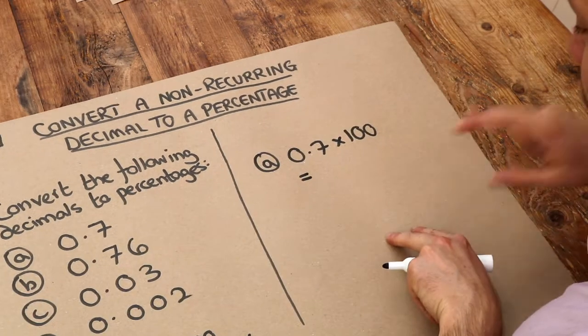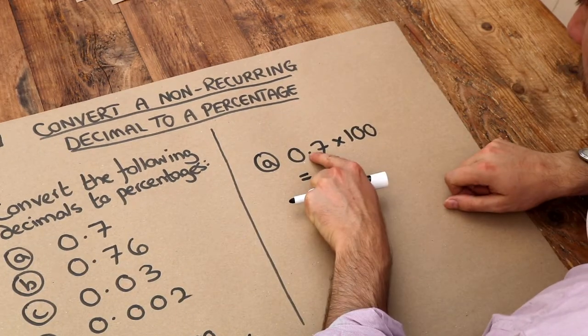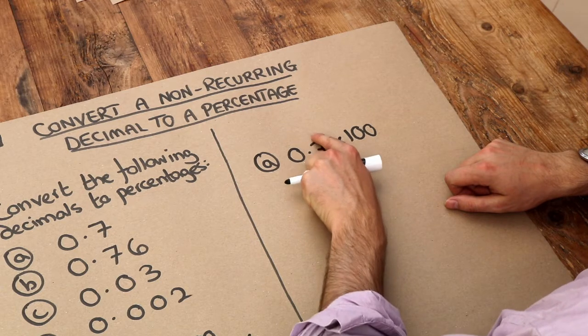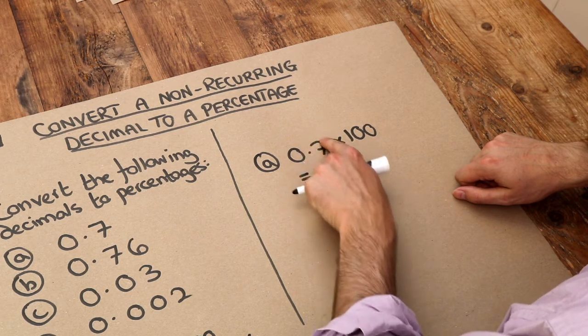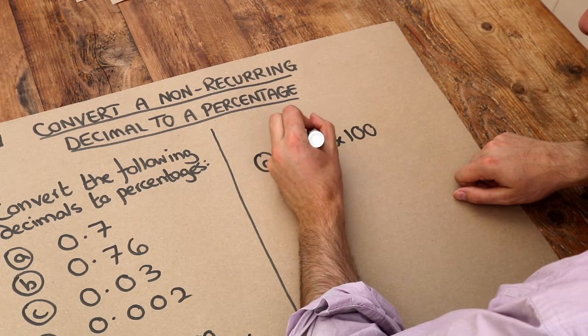Now to times by 100, we have to move the decimal point two places to the right. Because we can see there's two zeros there, so the decimal point moves two places. So it moves once like this, and then it's going to move once again.